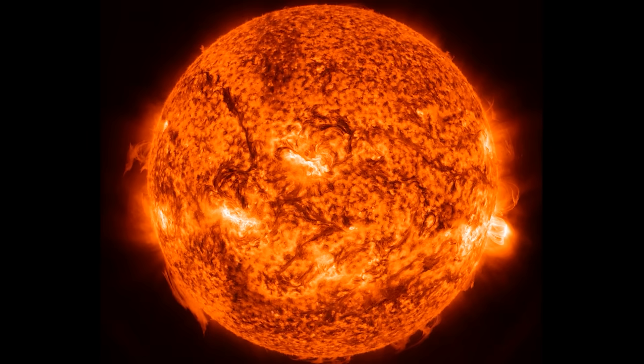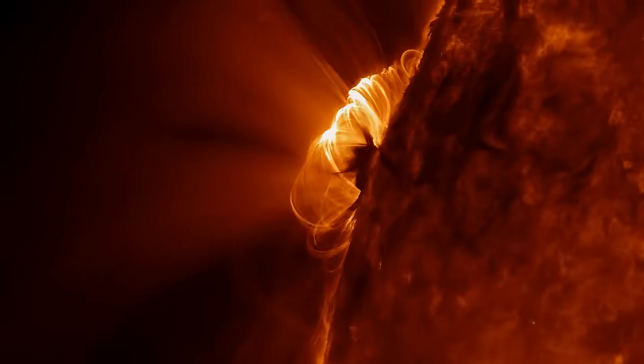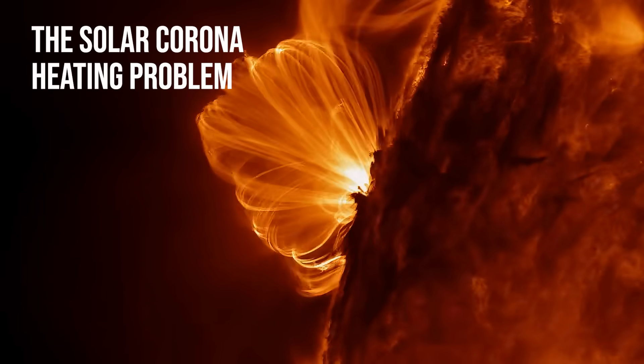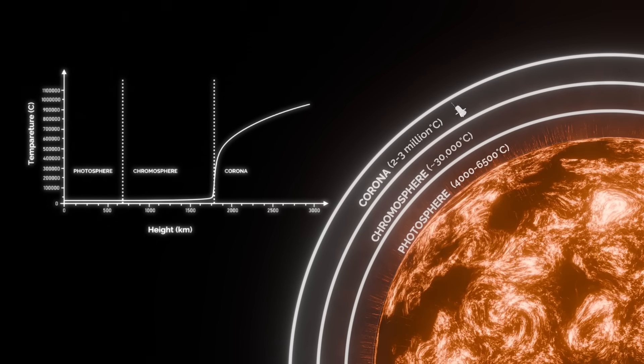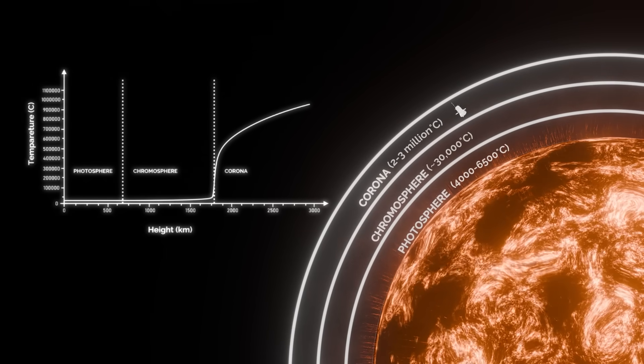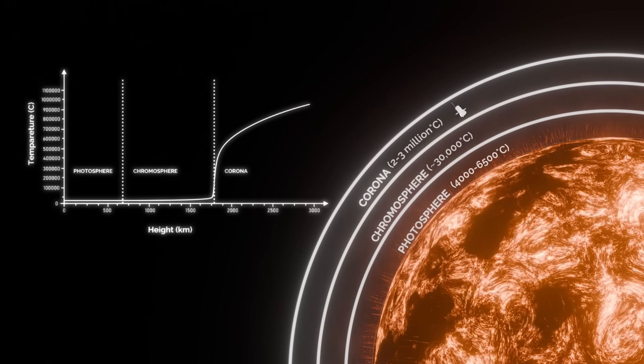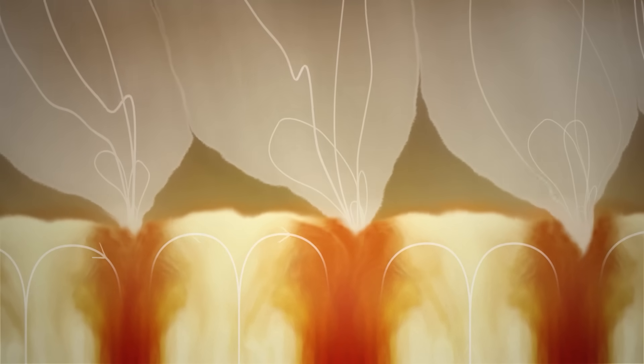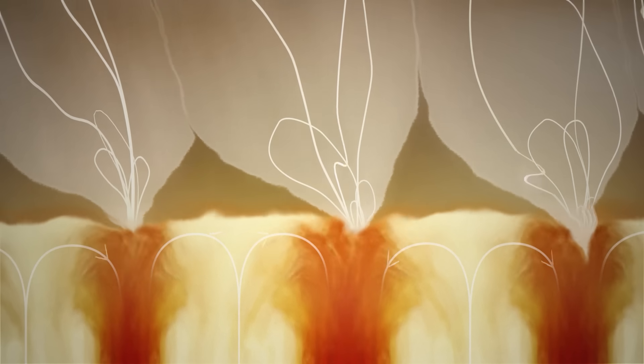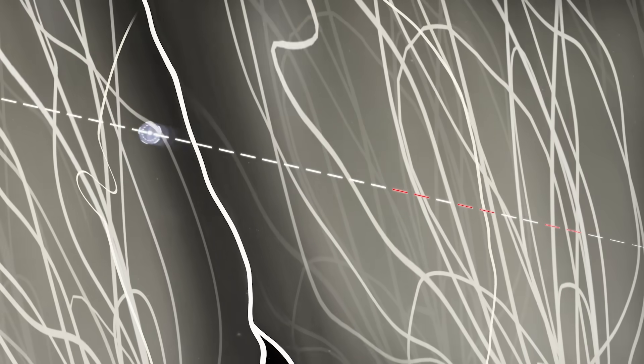But these aren't just strange solar hiccups. They might hold the key to solving one of the greatest mysteries in solar physics. Why is the Sun's outer atmosphere, the corona, hotter than its surface? It seems counterintuitive. The corona, which stretches millions of kilometers away from the Sun's core, reaches temperatures over a million degrees Celsius. That's two to three hundred times hotter than the photosphere. If switchbacks are indeed caused by energetic magnetic events like reconnection, they could be carrying energy from the Sun's surface outward, helping to heat the corona to these extreme temperatures. By studying these zigzagging flows up close, Parker might finally help crack this decades-old mystery.